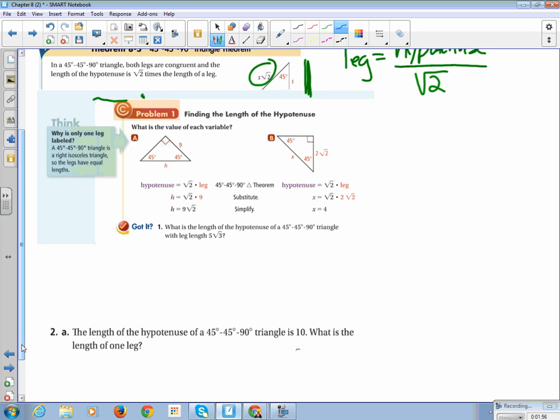All right, so when we look at this question here, what is the length of the hypotenuse of a 45-45-90 triangle? So what I do first, every time I encounter a question that doesn't have a picture, I draw the picture, with leg length 5 root 3. So I know my length of my leg is 5 root 3, I know this guy is 5 root 3, and I know that this is the hypotenuse.